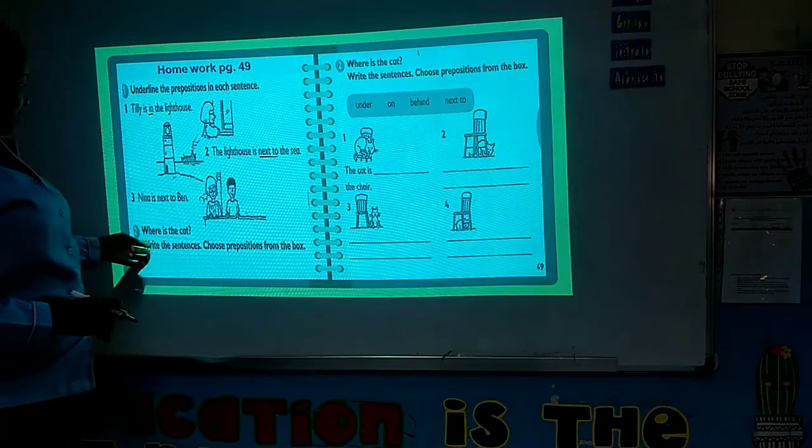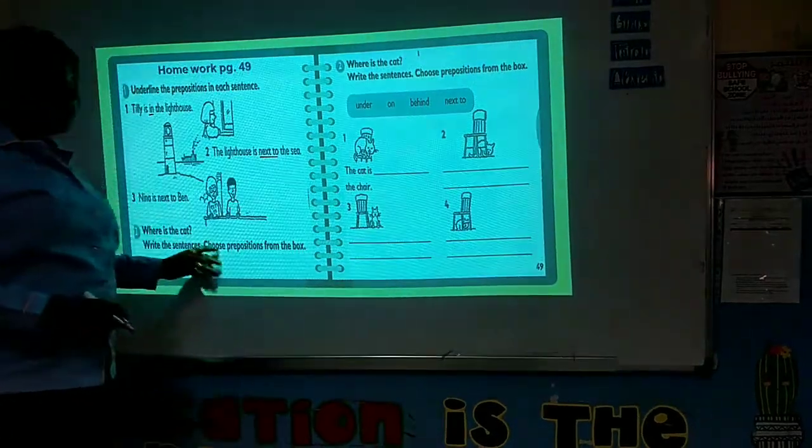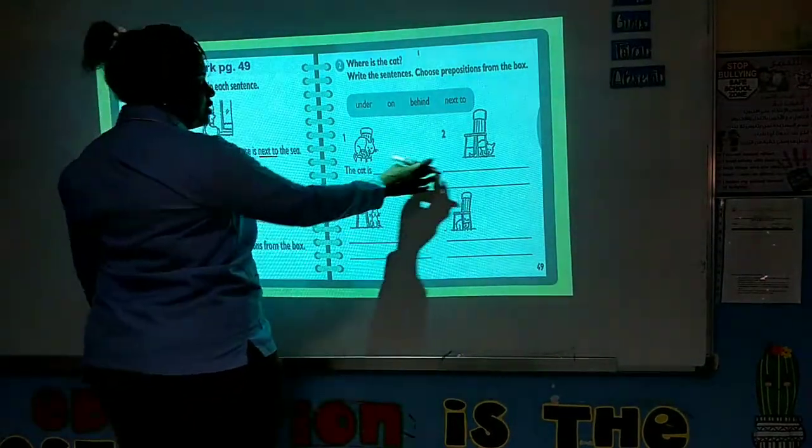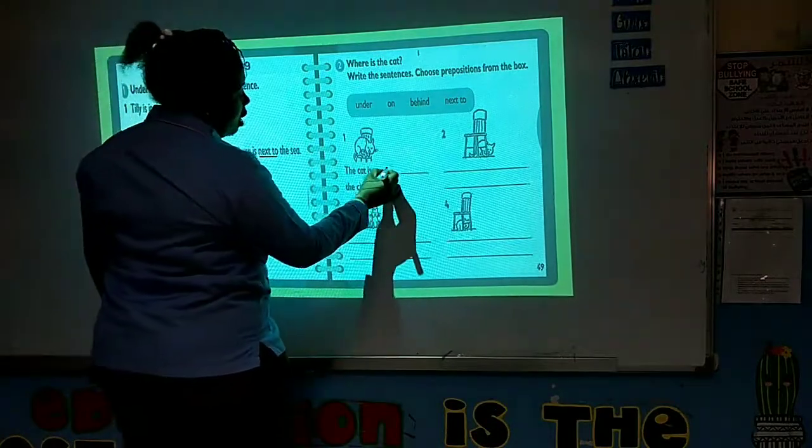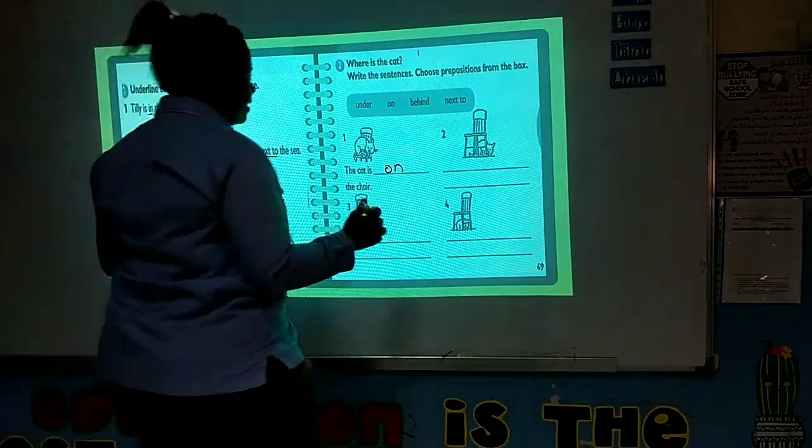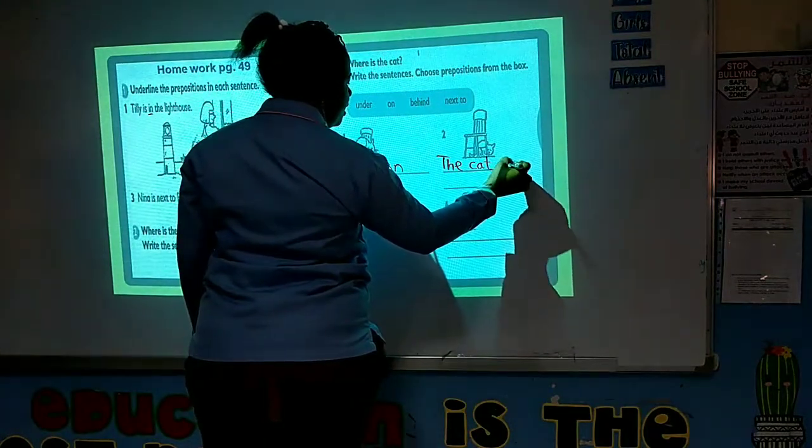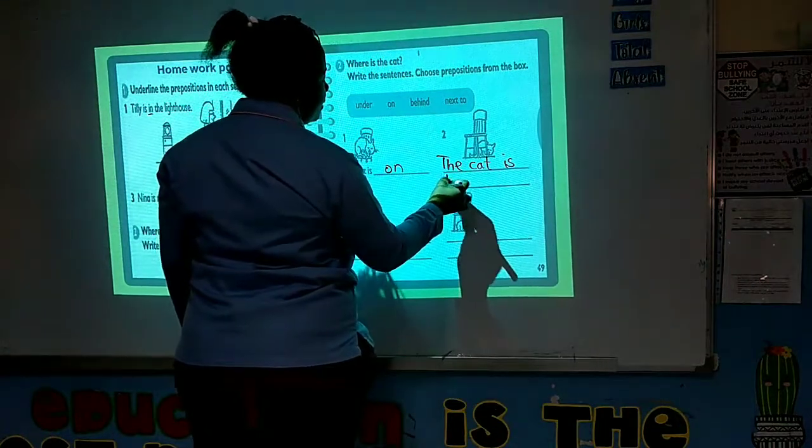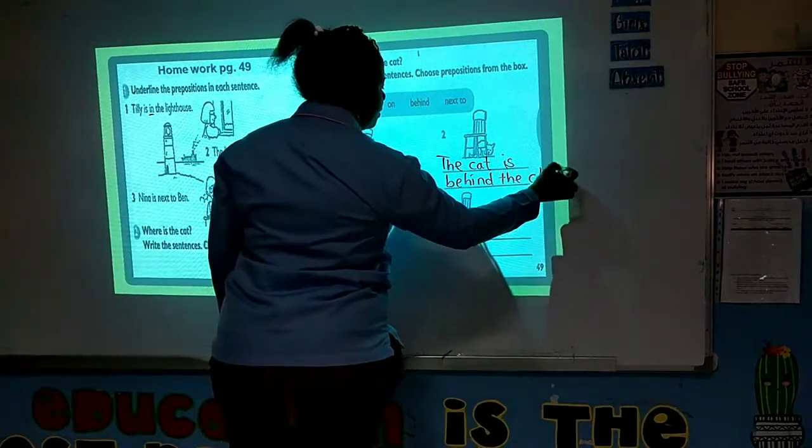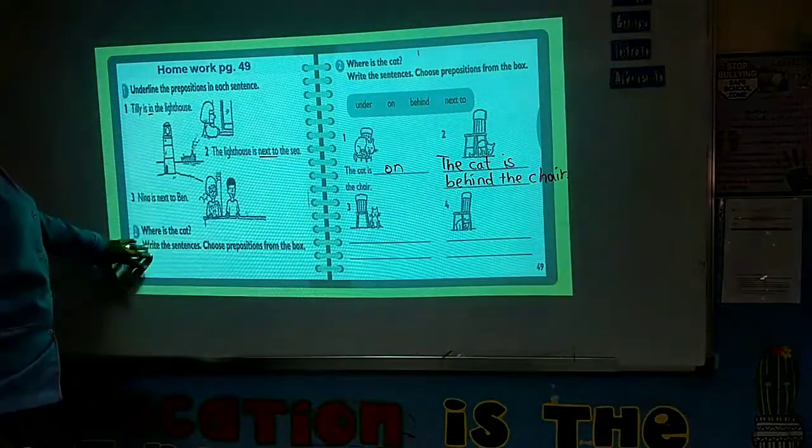Where is the cat? Do a little writing. Write the sentence. Choose preposition from the box. Here you're going to write the sentence. Where is the cat? I will do just these two. The cat is on the chair. And number two, the cat, I'm going to write the sentence. The cat is behind the chair. I want you to do these two for me and then wrap this one up.